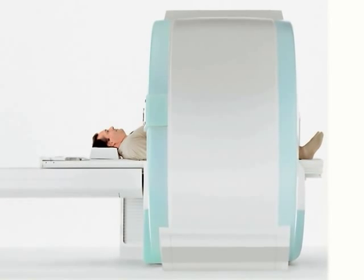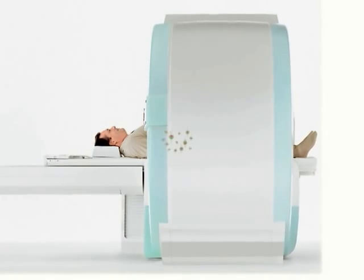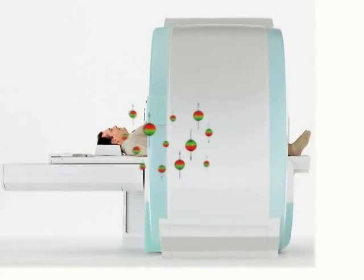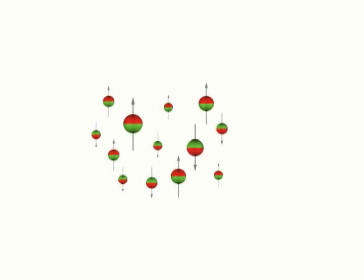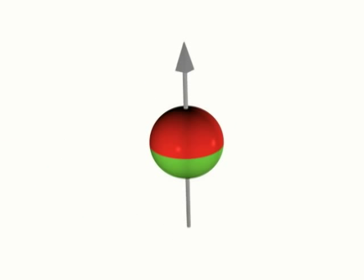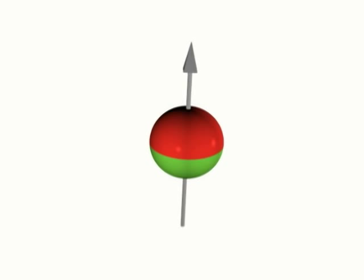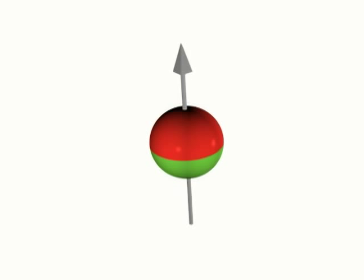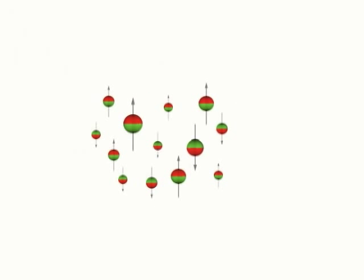MRI is based on the magnetic properties of atomic nuclei. Because the human body is approximately 75% water, the hydrogen nucleus is the most abundant nucleus in the human body. For this reason, the hydrogen nucleus, called the proton, is the most commonly used nucleus in MRI.